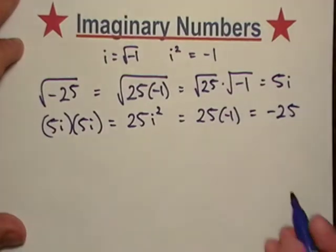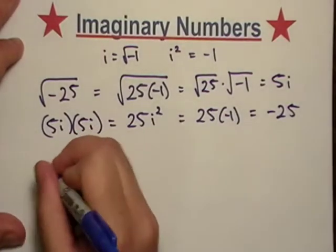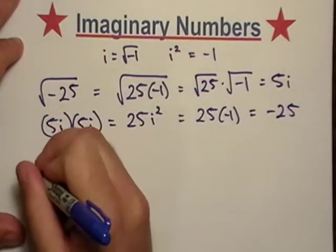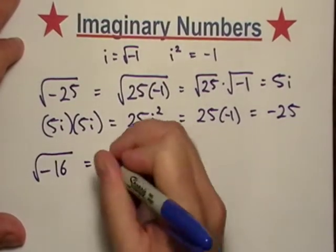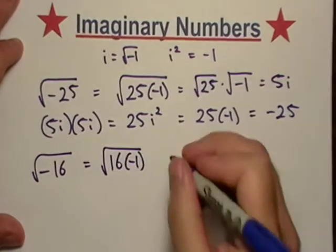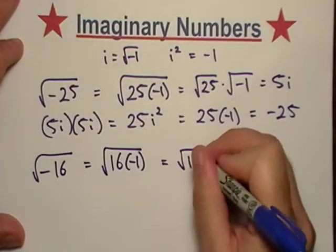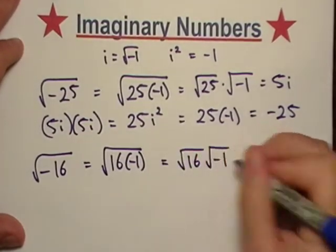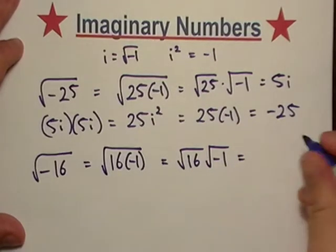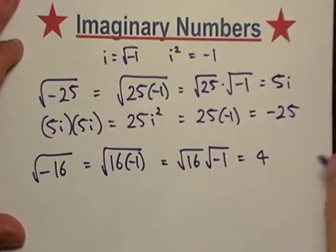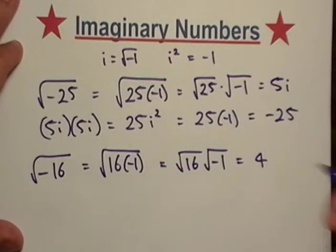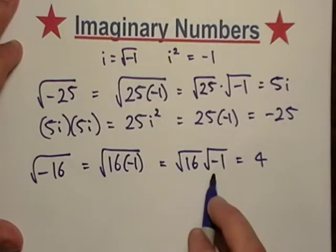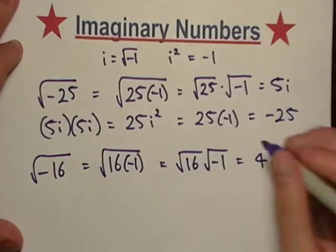So let's see here, how about negative 16. Square root of negative 16, which is just negative 16 times negative one, which is equal to four, but for all intents and purposes, I'm just going to leave it as regular four. And square root of negative one is i.